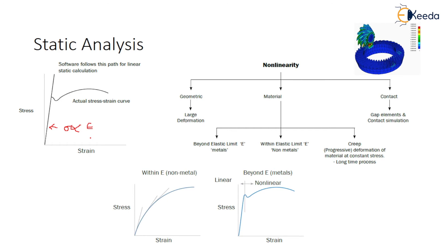Creep is a progressive deformation of a material at a constant stress — that means it is a long-term process. Contact refers to gap elements and contact interaction, as shown in our gear mechanism. Any type of spur gear, bevel gear, or helical gear — everywhere you get a contact or gap element. Material nonlinearity is very important. In the case of non-metals, the stress curve will be like one shape; in the case of metals, the stress curve transitions into the plastic region after the metallic elastic limit. These graphs represent that behavior.